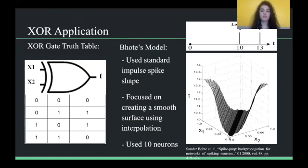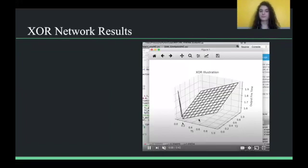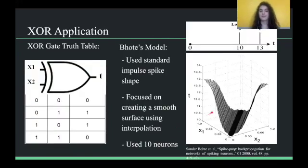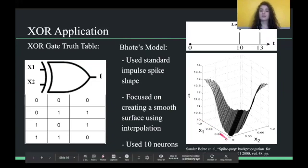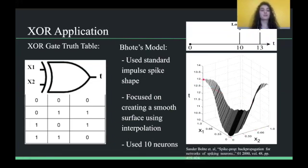So, in his graph, we can see that at the input 0, 0, and at the input 1, 1, that the time is 10, whereas at the input 0, 1, and 1, 0, the output is 13, which would be a logical 1, just like in the truth table. So, he did achieve this functionality by training his neural network.